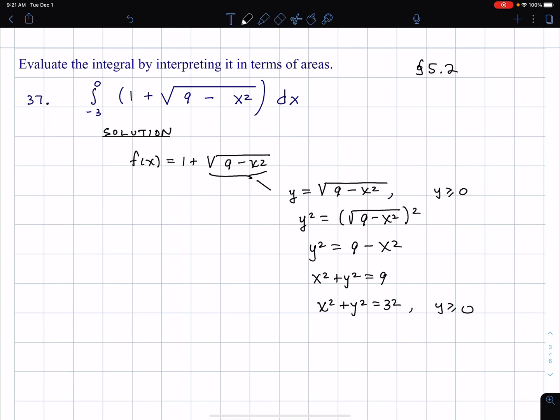So I'm going to include y greater or equal to 0. So what this is is an upper semicircle with radius 3. Now, this part here is a shift up by 1. What do I mean this part? This 1 here. That's a shift up by 1.